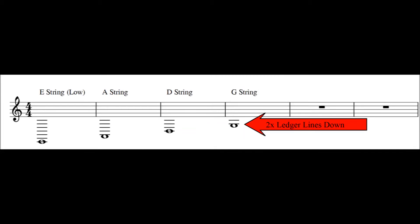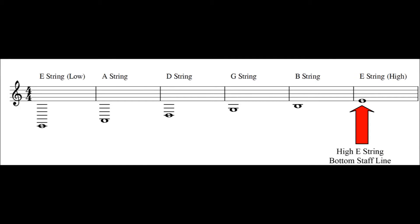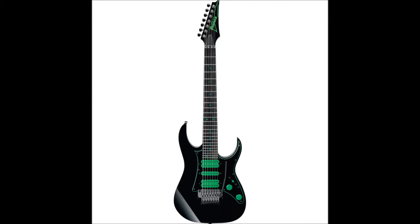The G string is just under the 2nd ledger line. The B string is just below the 1st ledger line. And the high E string is on the bottom line of the staff. In rock and metal music it's common to come across songs and bands that play guitar in lower tunings.